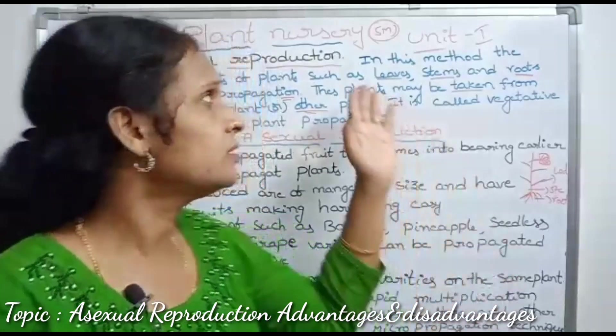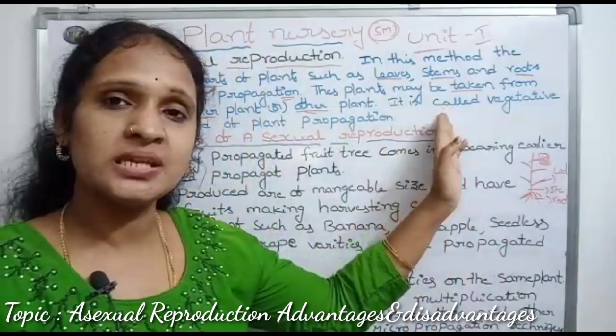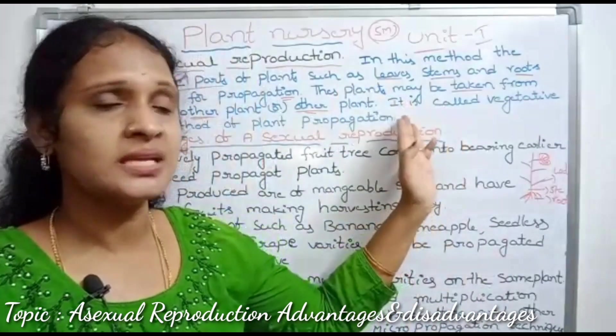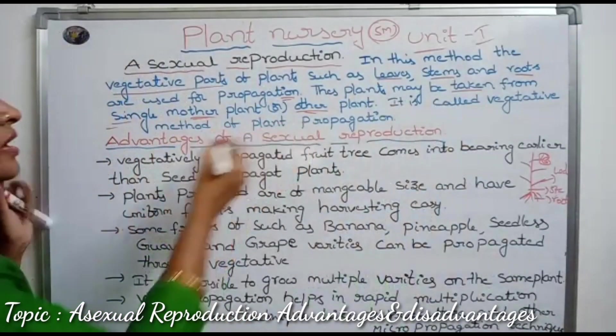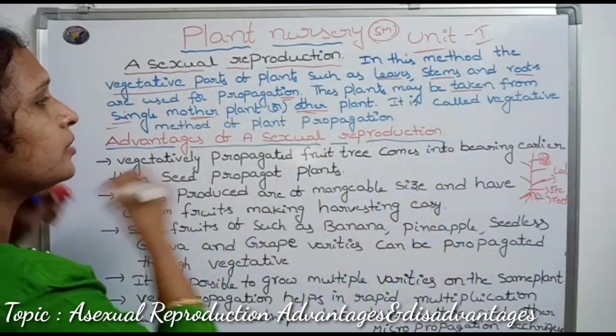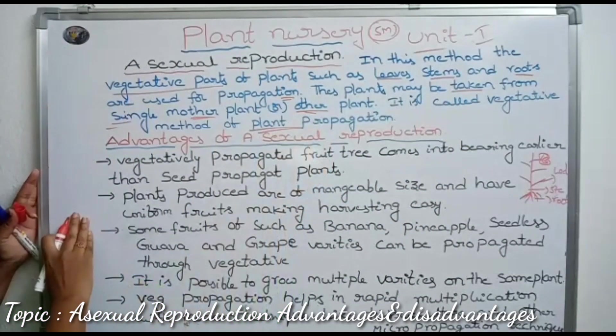Asexual propagation and vegetative propagation are the same. Both use a single part of the plant. It is called the vegetative method of plant propagation.